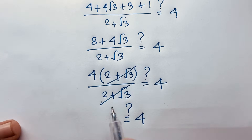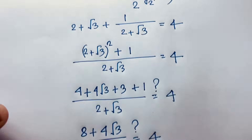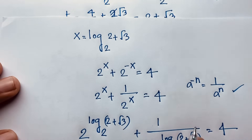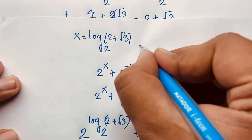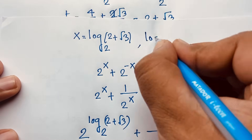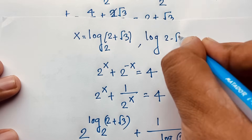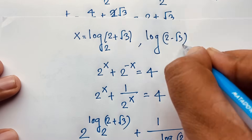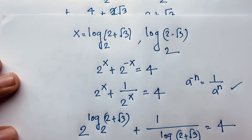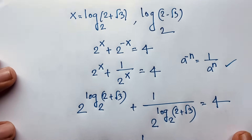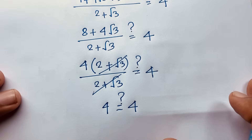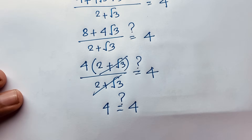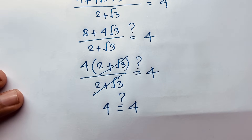So x equals log base 2 of (2 plus square root 3) and log base 2 of (2 minus square root 3). This is our final answer in this maths Olympiad question. Thank you all. If you enjoyed this video, do subscribe to my channel for other interesting videos. Goodbye. Take care.